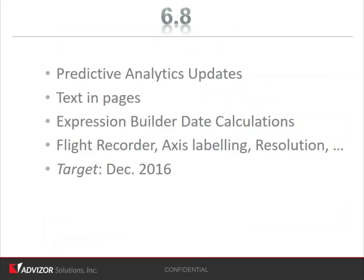So 6.8 — there are four things within the target of December 16. First, there's a bunch of changes to how we do predictive analytics, both in how you set models up and how we report output from models. Second, we have a new chart, a text chart, where you can put formatted text, links and stuff in the middle of a project page, surrounded by the other charts. Three, we've made a bunch of updates to our expression builder, especially in the area of date calculations. Fourth, we've made improvements with the flight recorder, how we label axes, and we are fully capable of high DPI resolution screens. So let's go through each of these.